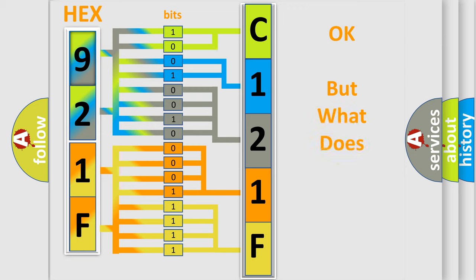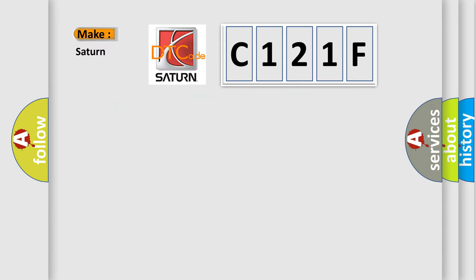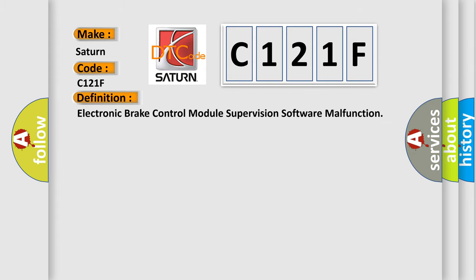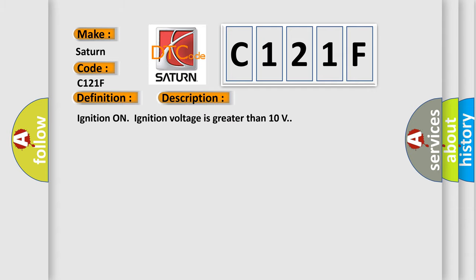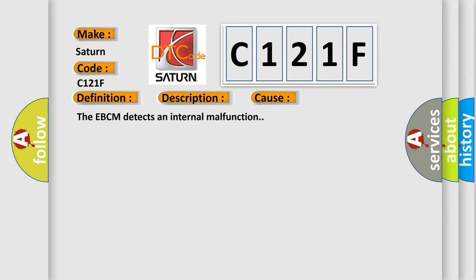We now know how the diagnostic tool translates received information into a more comprehensible format. The number itself does not make sense if we cannot assign information about what it actually expresses. So, what does the diagnostic trouble code C121F interpret specifically for Saturn car manufacturers? The basic definition is: Electronic Brake Control Module supervision software malfunction. This DTC occurs when ignition is on and ignition voltage is greater than 10 volts. This diagnostic error occurs most often when the EBCM detects an internal malfunction.